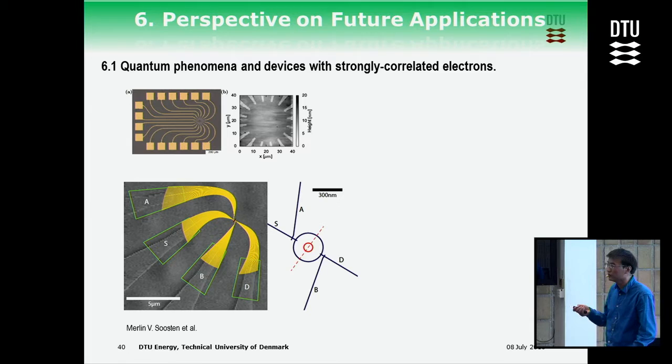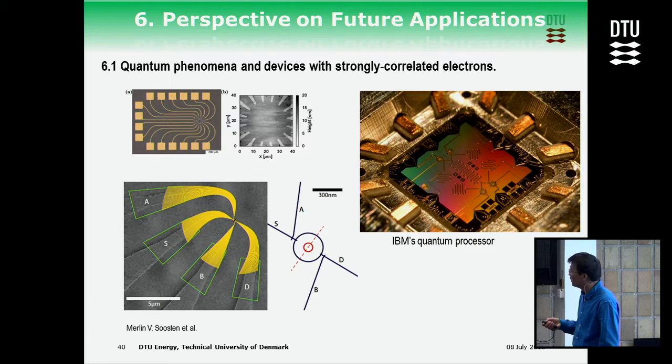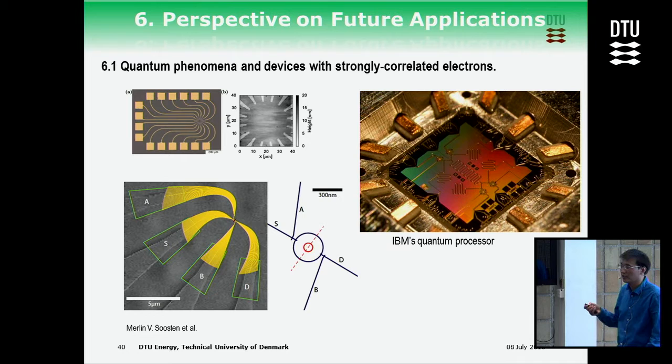Previously all these quantum devices were only based on semiconductor interfaces, and now you can also use these oxide interfaces to build quantum devices. Our PhD student made a quantum ring and the result is also promising. So maybe in the near future, as people are now using semiconductors to build quantum computers, we can also use oxide interfaces to build quantum computers.